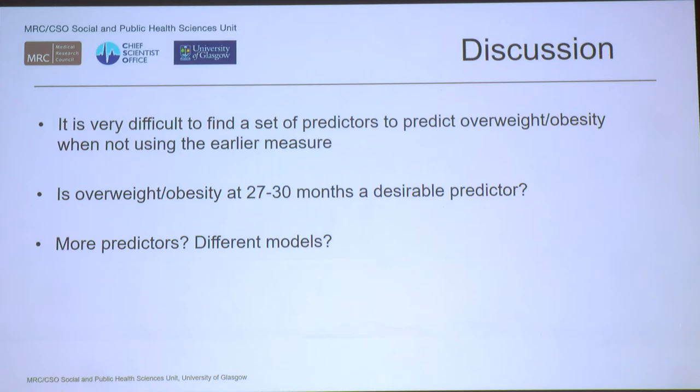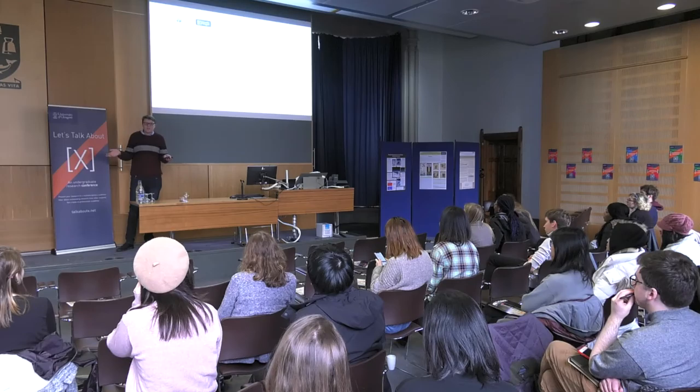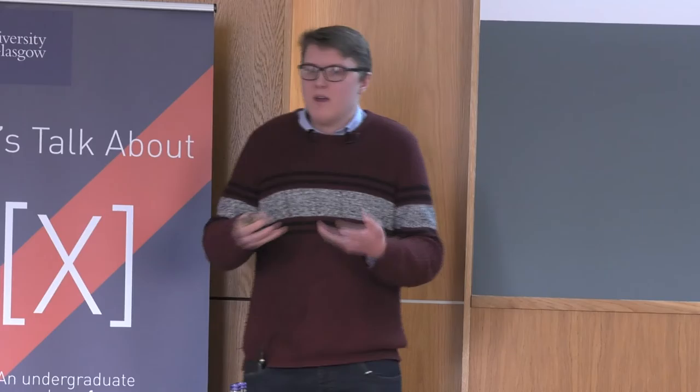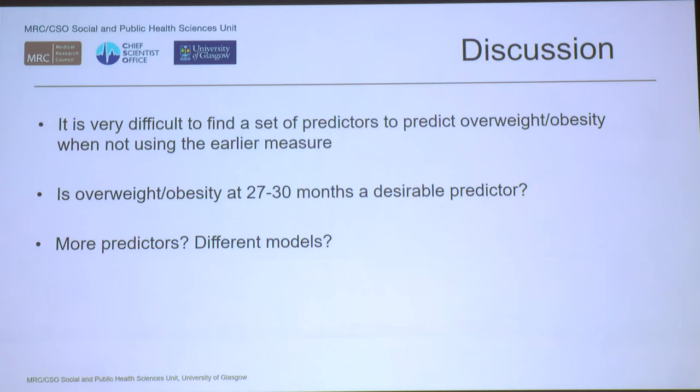What does that tell us? First, it's very difficult to find a set of predictors that can accurately predict obesity at five — that's despite those inequalities existing. There's a distinction between how well something predicts and whether inequalities exist in the first place. When we removed that earlier BMI measure, prediction became quite poor, so it's hard to build a model that can predict overweight status at five years old.